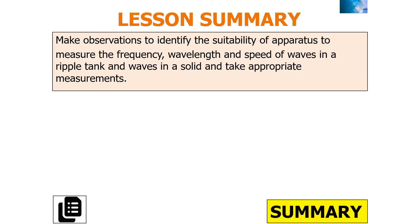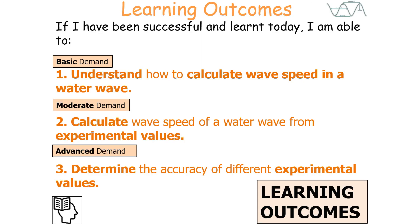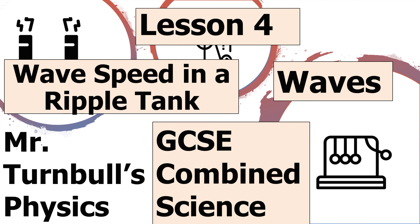In today's lesson we should be able to make observations to identify the suitability of apparatus to measure the frequency, wavelength, and speed of waves in a ripple tank and take appropriate measurements. If we've been successful, we can understand how to calculate wave speed in a water wave, calculate the wave speed from experimental values, and determine the accuracy of different experimental values. I hope you've enjoyed today's lesson on wave speed in a ripple tank, part of the GCSE Combined Science course for Physics. Thank you and have a lovely day.